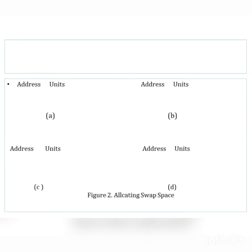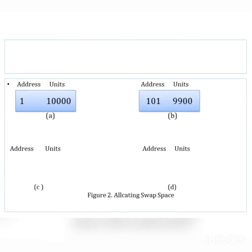There will be four diagrams. The initial map has address 1 and 10,000 available units. Process one requires 100 units, so we increment the address by 100 — the new address becomes 101. We have allocated 100 units to process one, so we reduce the total units. The count is now 9,900 units.